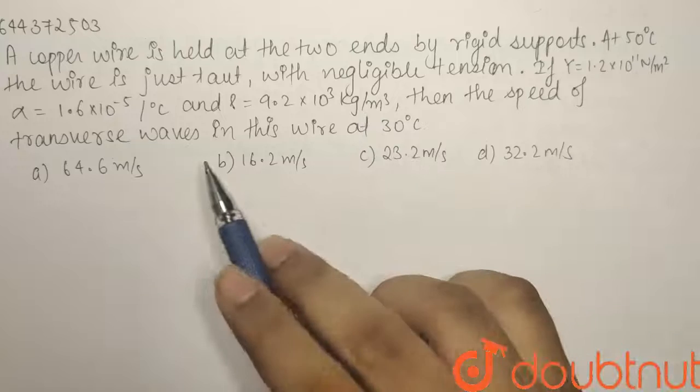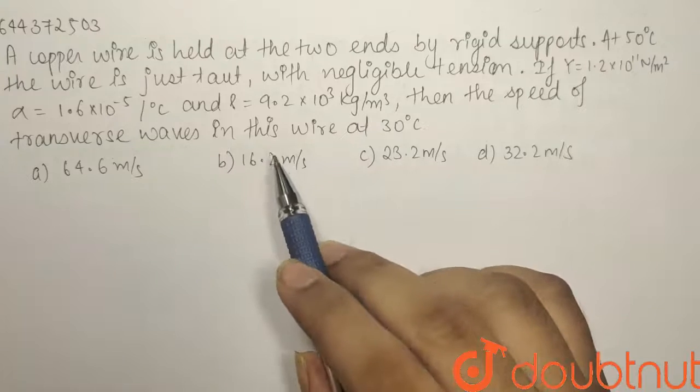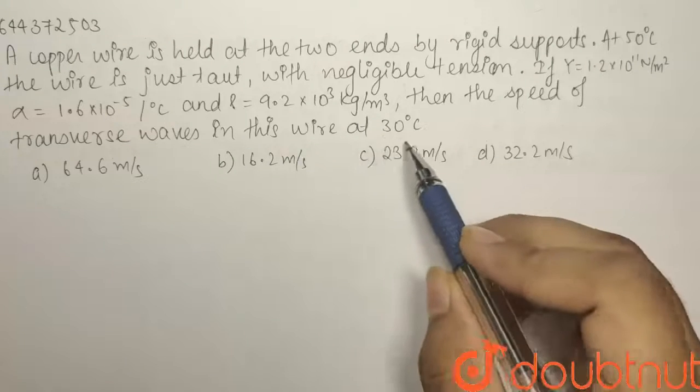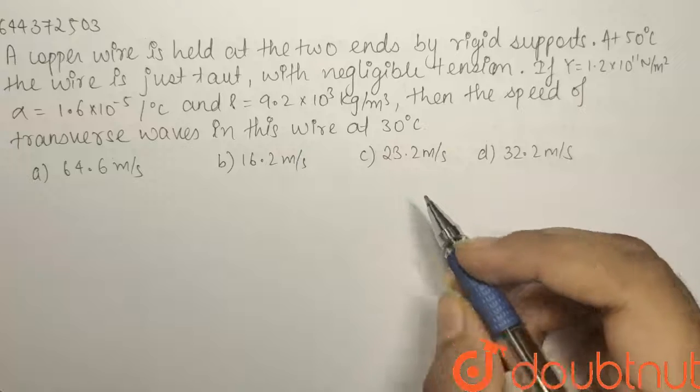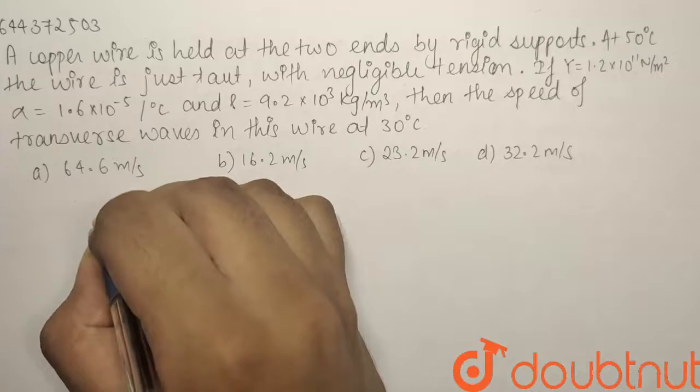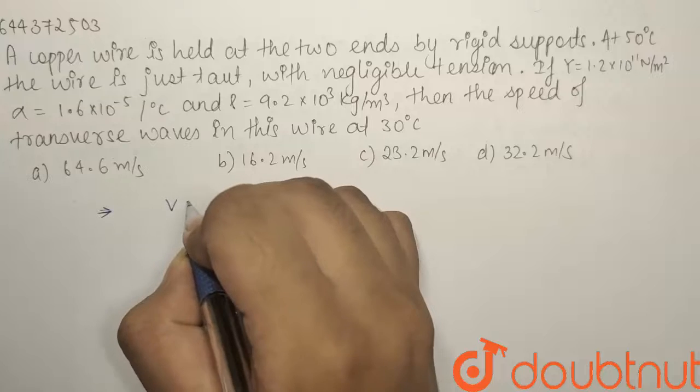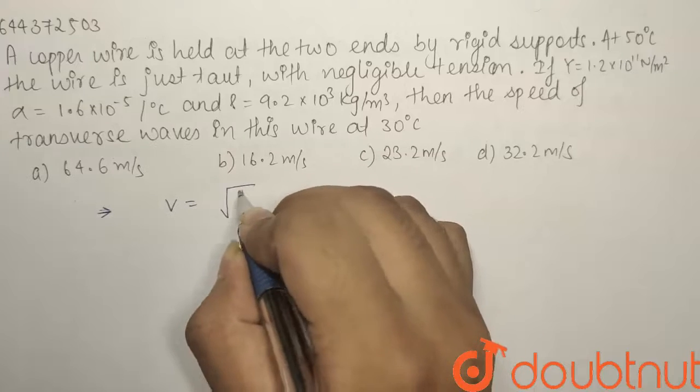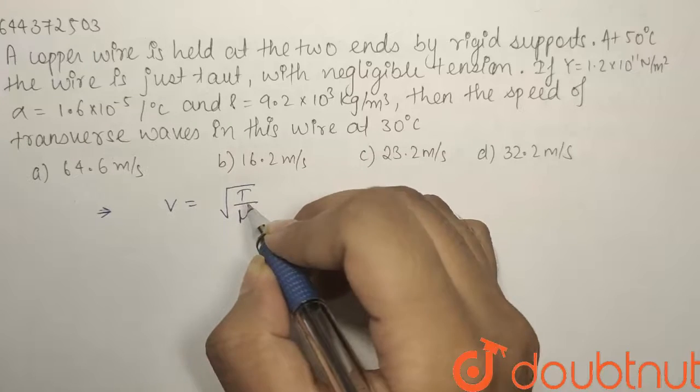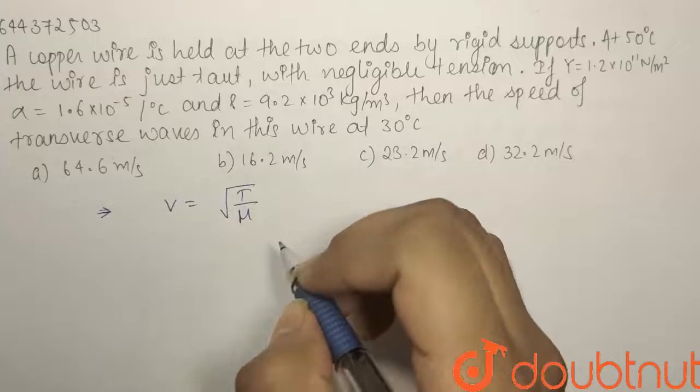We have to find out the speed of the transverse wave that are being formed in this wire at a new temperature that is 30 degrees Celsius. To solve this we know that the transverse wave in a string have the velocity equals to square root of T by μ, where T is the tension in the string and μ is mass per unit length.